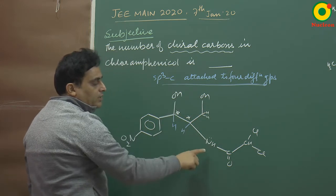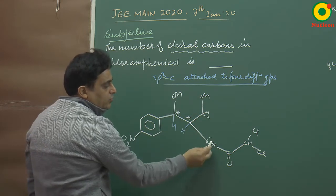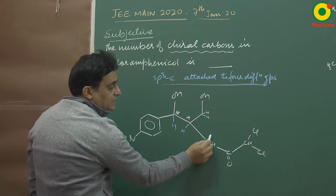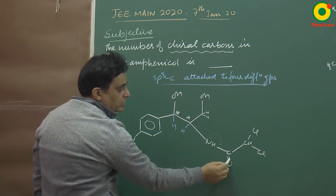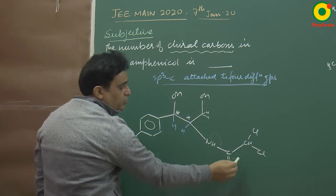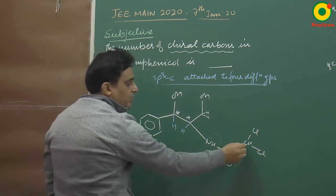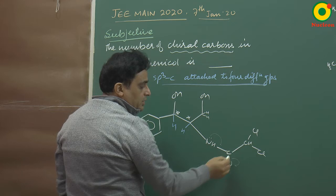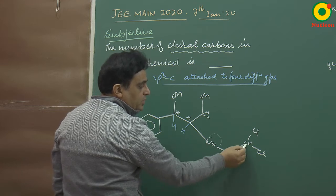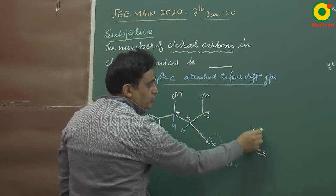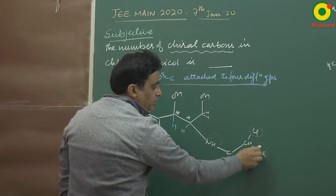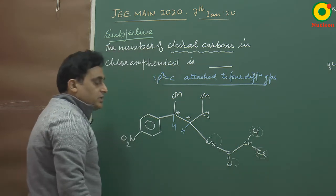This carbon is not a chiral carbon because it is not sp3 — it has a delocalized lone pair. And this carbon is also not chiral because it has two identical groups: Cl and Cl.